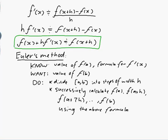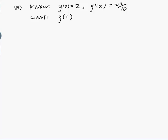So let's actually do it for our example. I'll just start a new page. So for ours what do we know? We know that y(0) is 2 so there's the value of f(a). We've got y(0) and the formula for y'(x), that would be dy/dx which is x squared on 10. Okay, and we want y(1).